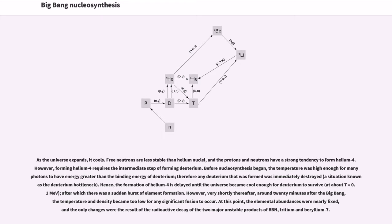However, very shortly thereafter, around 20 minutes after the Big Bang, the temperature and density became too low for any significant fusion to occur. At this point, the elemental abundances were nearly fixed, and the only changes were the result of the radioactive decay of the two major unstable products of BBN, tritium and beryllium-7.